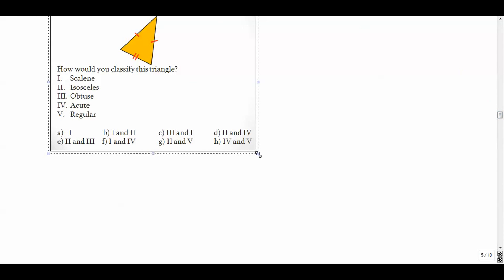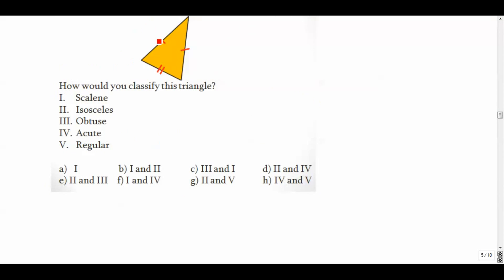Let's try this one — it has markings on it. I'm looking at one tick mark and one tick mark, so I know it's isosceles. This side has two tick marks, which means it's different from the other two — so it's isosceles. And it also appears to be acute. All three angles appear to be less than 90. So two and four — that would be letter D.